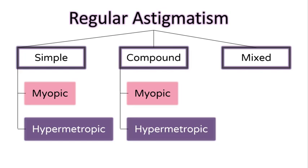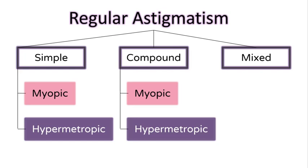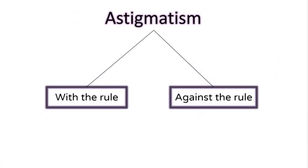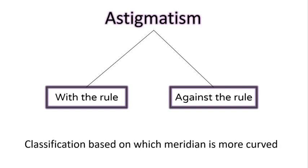So basically, regular astigmatism can be classified into simple, compound, and mixed. Simple is when one meridian is emmetropic — light rays fall on the retina — and the other is either myopic if it falls in front or hypermetropic if it falls behind. In compound astigmatism, both meridians are either myopic or hypermetropic but to different degrees — for example, one at minus one and the other at minus two. In mixed astigmatism, one meridian is myopic and the other is hypermetropic. The other classification is by which meridian is more curved: if vertical, it is with-the-rule; if horizontal, it is against-the-rule.